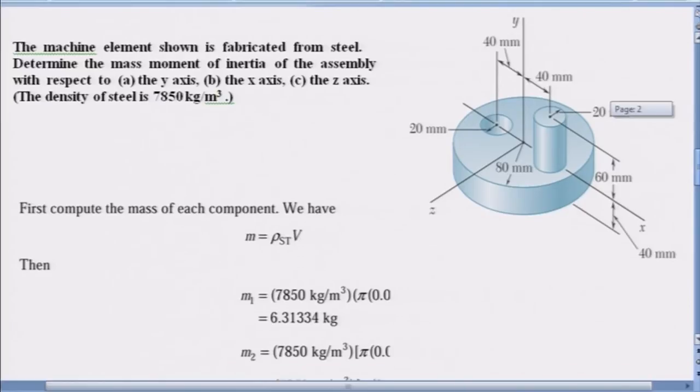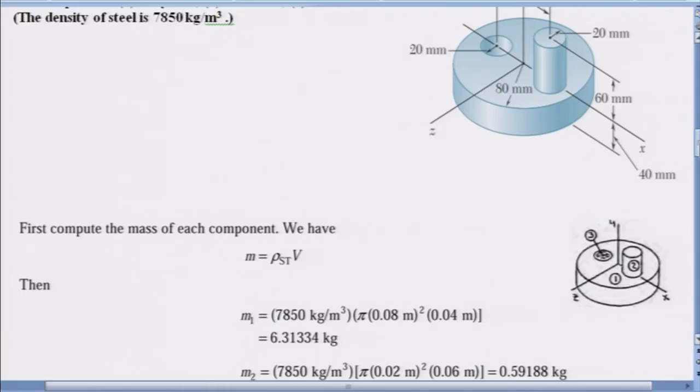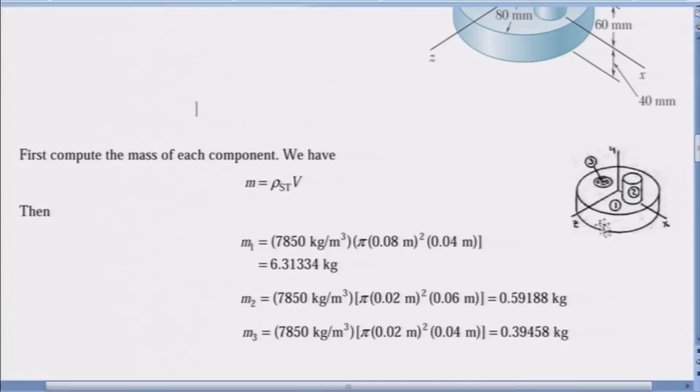So if you go by the solution, the approach would be - it has to be discretized into three bodies as you see here: one, two, and three. One is that complete solid disc, two is the cylinder, and three is that cut out in the form of a cylinder.